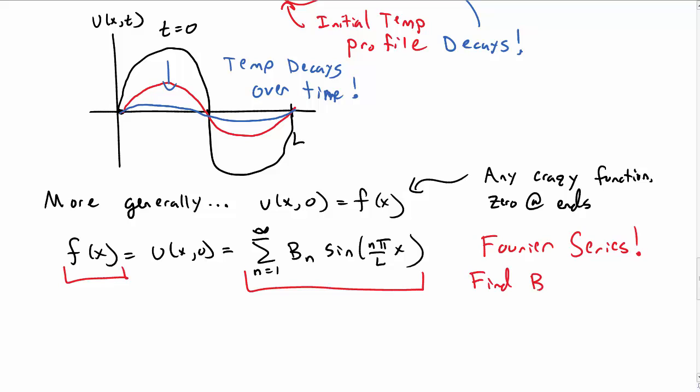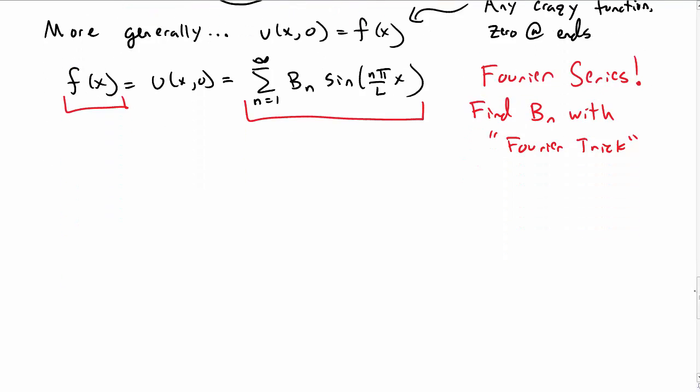That says we're going to match a function by a sum of sine terms. So we can find the b sub n using the usual kind of Fourier trick that you would do to solve a Fourier series. Let's just go through the details of that here.